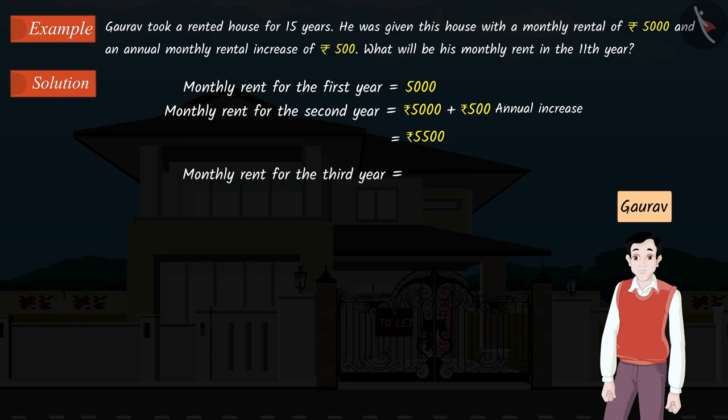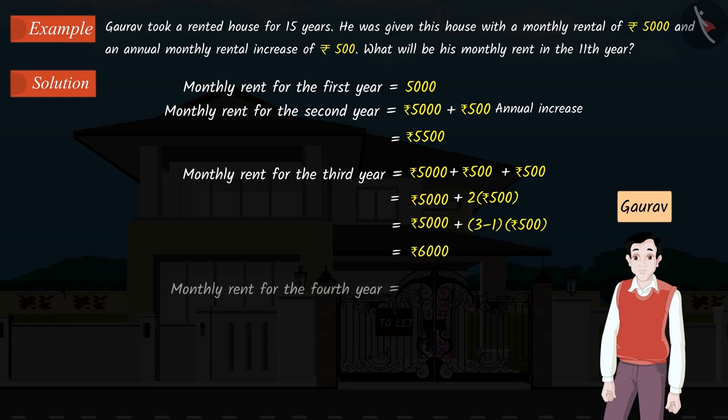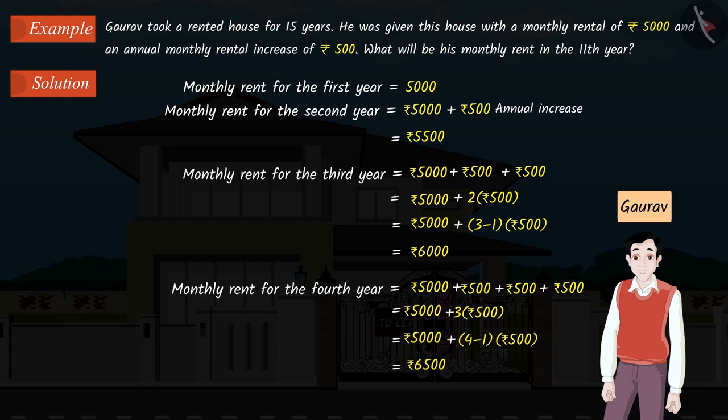Similarly, we can find the monthly rent for the third year by adding Rs. 500 to the rent of the previous year. Similarly, we can also find the monthly rent for the fourth year. Therefore, the monthly rent for the third year will be Rs. 6,000 and the monthly rent for the fourth year will be Rs. 6,500.